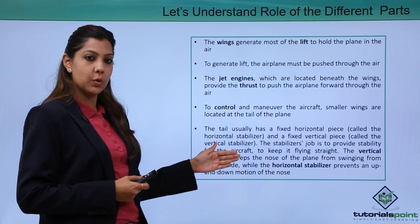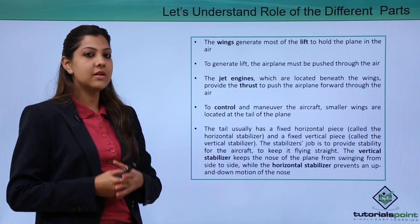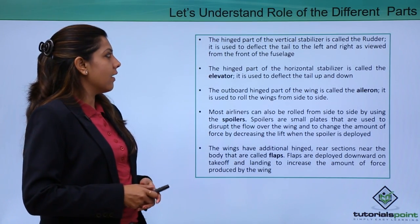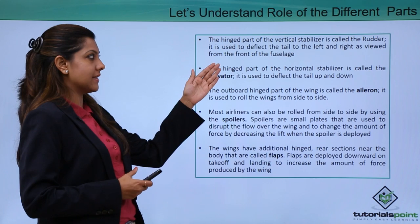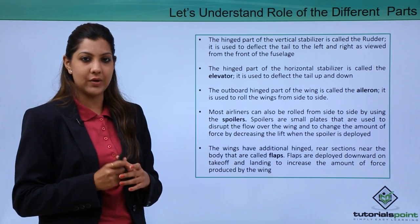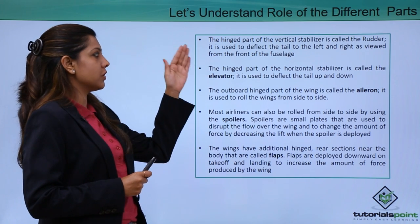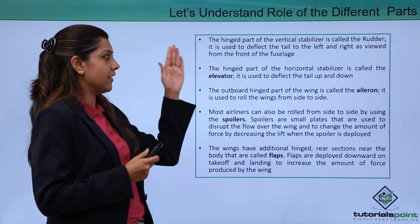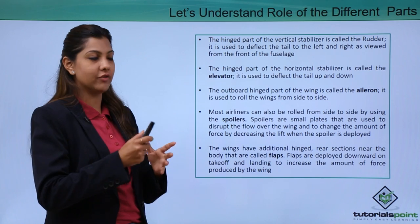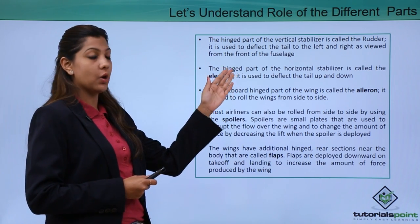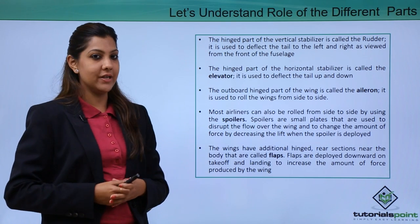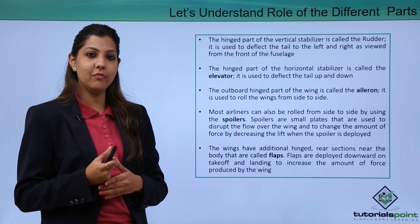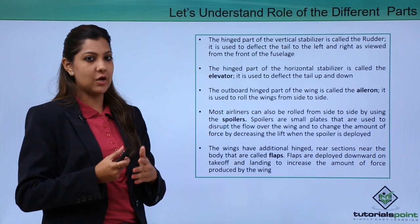The vertical stabilizer keeps the nose of the plane from swinging from side to side, while the horizontal stabilizer prevents up and down motion. The hind part of the vertical stabilizer is called the rudder, which deflects the tail left and right as viewed from the front of the fuselage. The hind part of the horizontal stabilizer is called the elevator, which deflects the tail up and down. The rudder handles left-right movement; the elevator handles up-down movement.